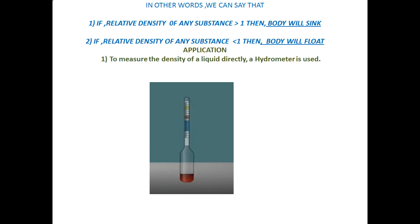But in the second case, if I write: relative density of iron = density of iron divided by density of mercury, you will see the denominator value is more than the numerator, which means that value is less than 1, and therefore the body will float. I will explain this topic again during my numerical parts.